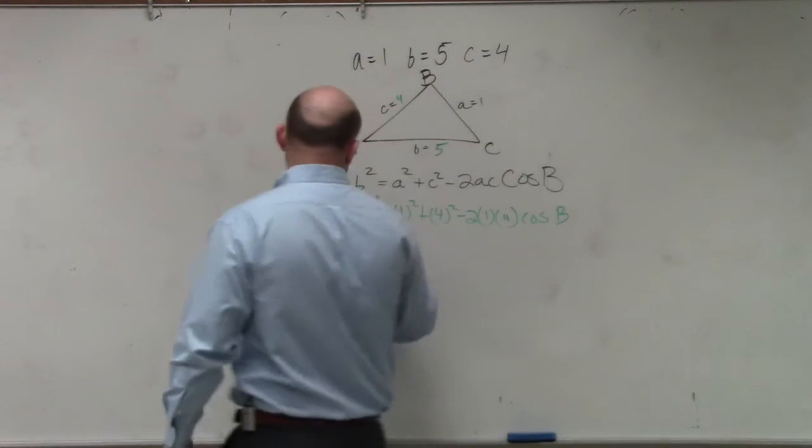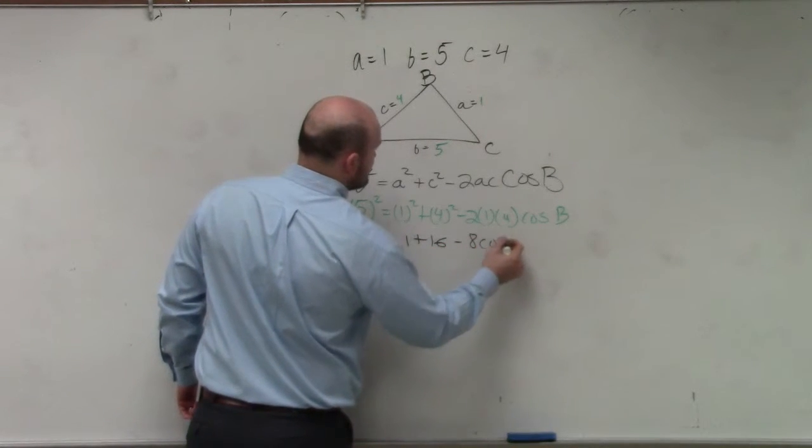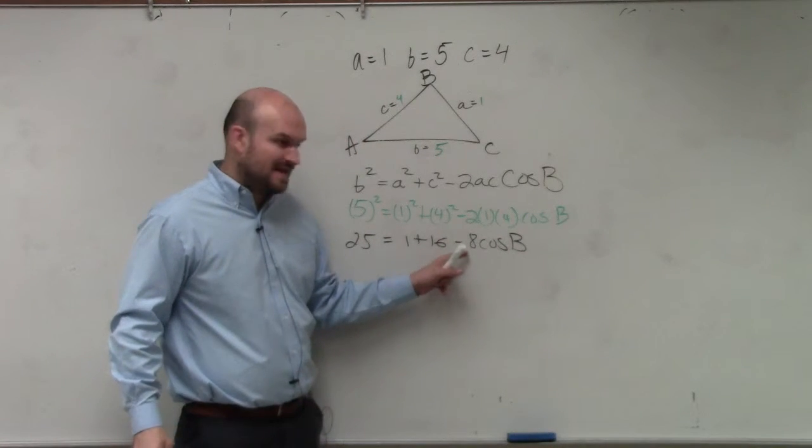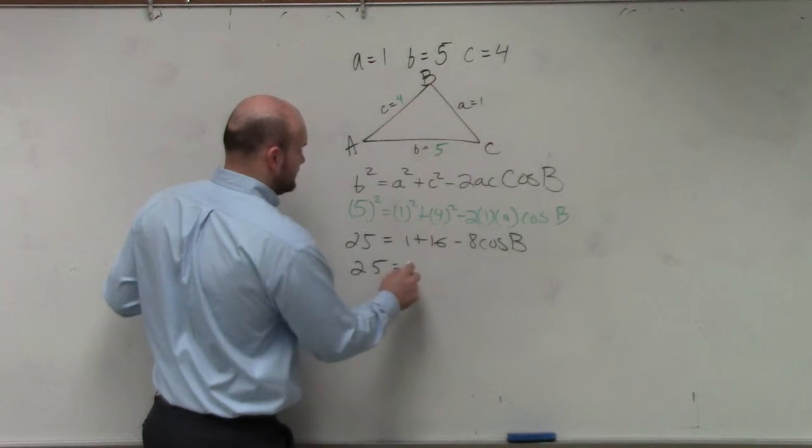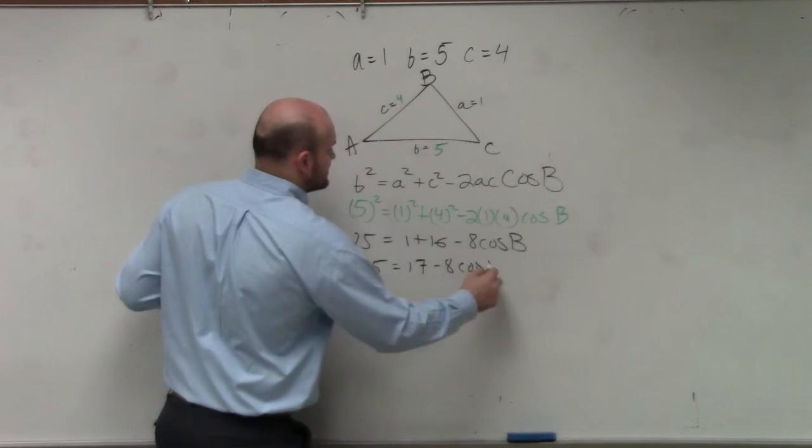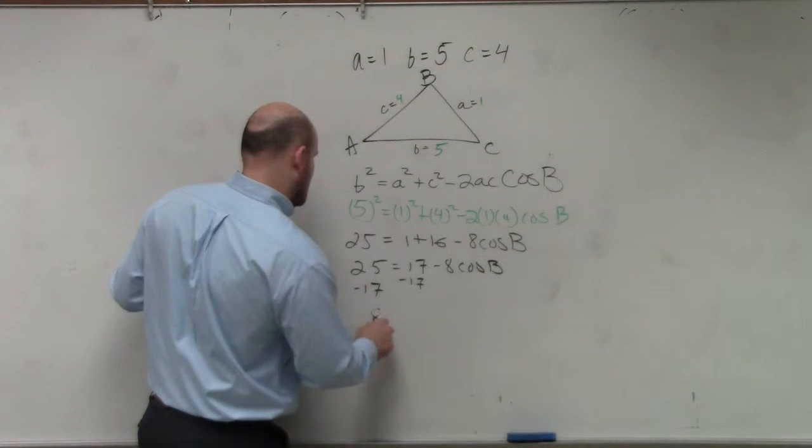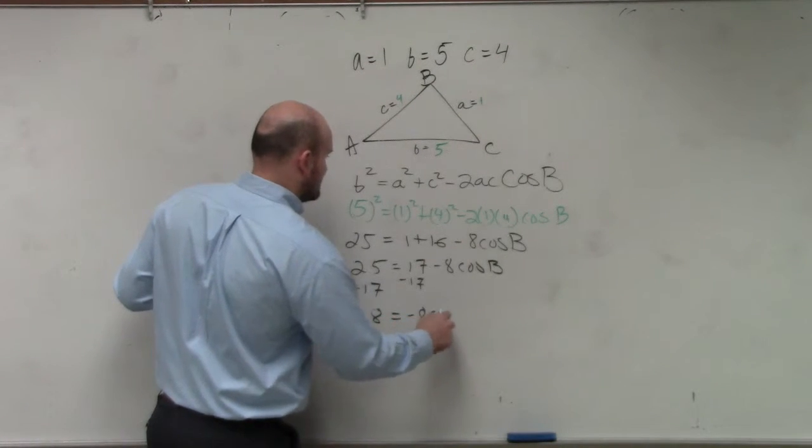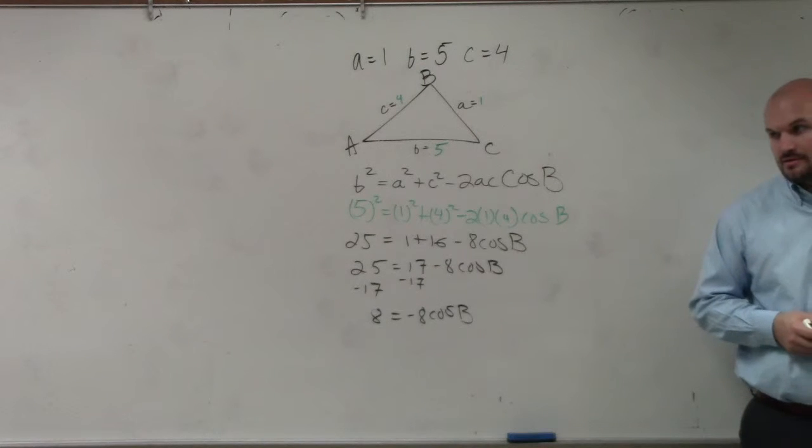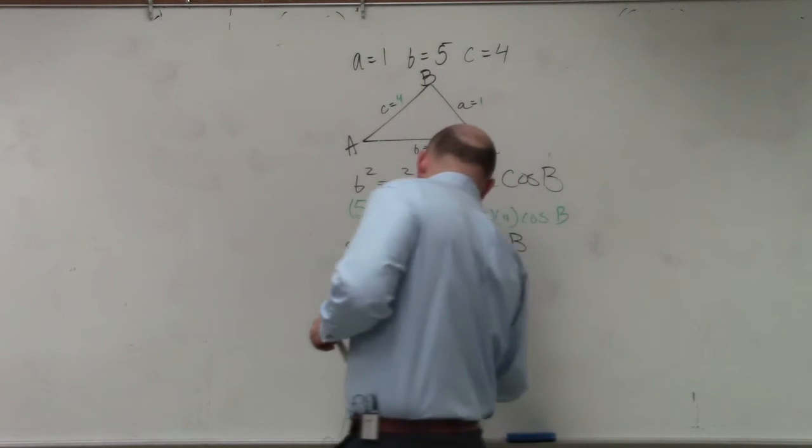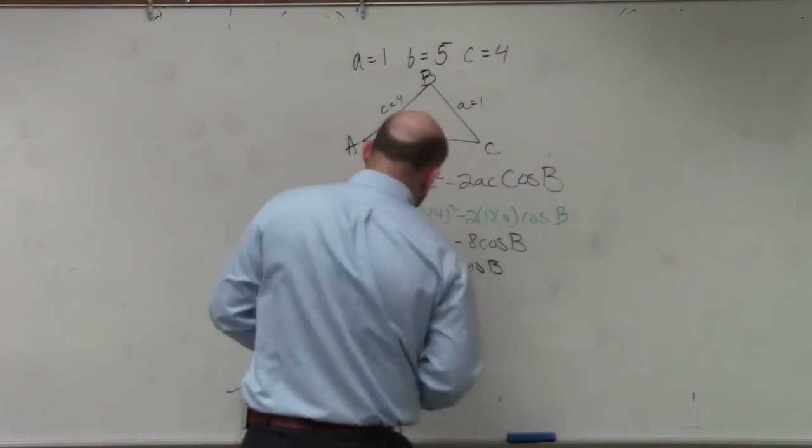Now, let's do everything step by step. 5 squared is 25 equals 1 plus 16 minus 8 times cosine of b. Please remember, you cannot subtract the 16 and the 8. That 8 is being multiplied by the cosine, so you can't subtract those. So I have 25 is equal to 17 minus 8 times the cosine of b. Subtract 17 on both sides. So therefore, I have 8 equals negative 8 cosine of b. Is everybody following my math, my inverse operations so far? Then I just divide by negative 8 on both sides. So I have negative 1 equals cosine of b.